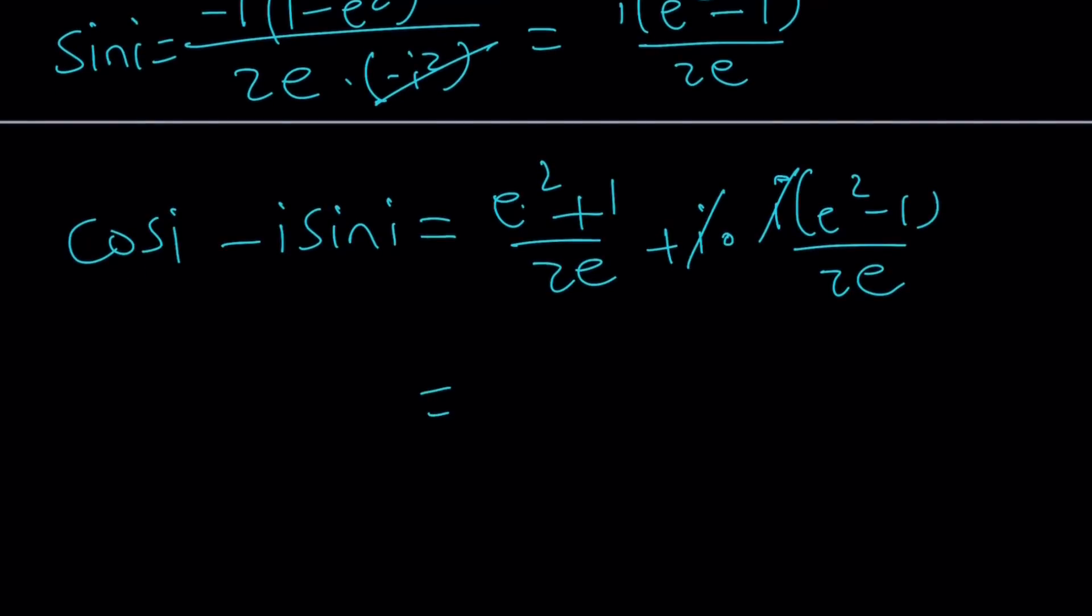This is going to give you what? e squared plus 1 plus e squared minus 1 divided by 2e or not 2e. 1 cancels out, we end up with 2e squared divided by 2e. And that is going to be e.